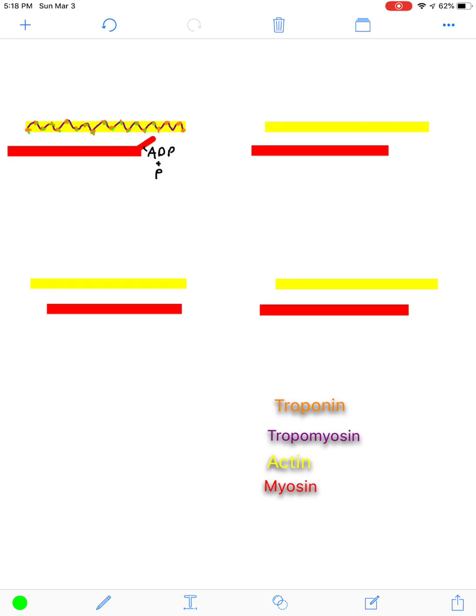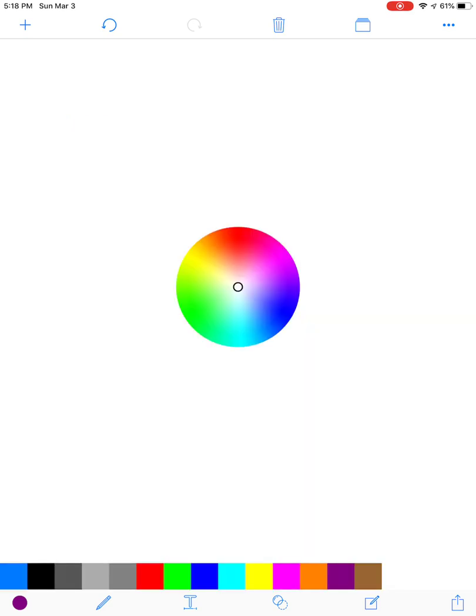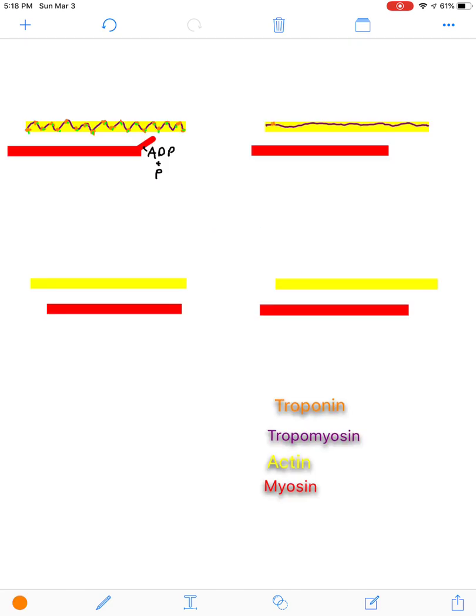And once calcium is present, it's going to bind to troponin, which is going to alter its shape. And when you alter its shape, that is going to allow tropomyosin to move out of the way. You can think of it as sliding off.